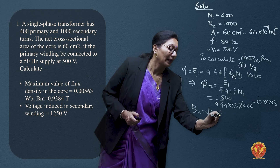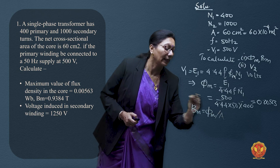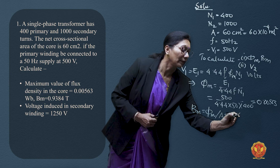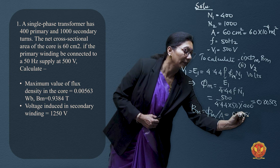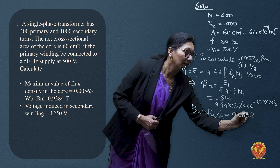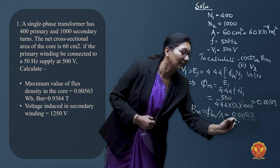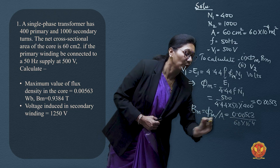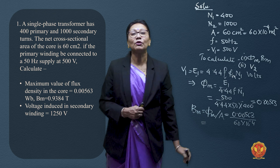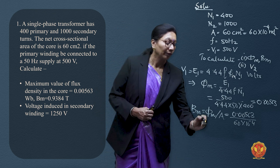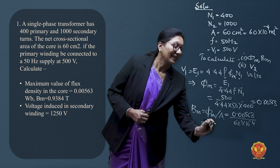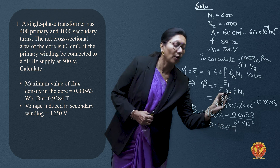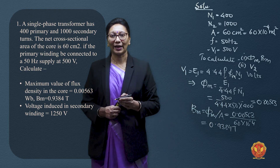With φm calculated as 0.00563, we divide by the core area of 60 × 10⁻⁴ m² to get the maximum flux density in the core: Bm = 0.9384 Tesla, or Webers per meter squared.